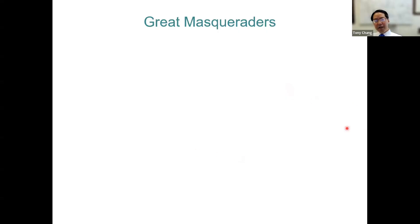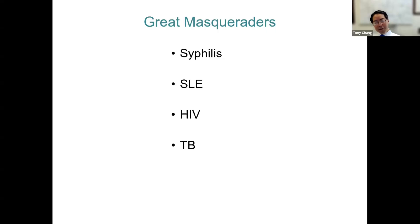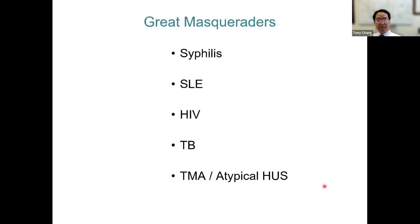I believe atypical HUS is a great masquerader. Right in the history of medicine, syphilis was one of the earlier ones, then it was lupus, then it was HIV — when that came on the scene, it was really perplexing. These are all fairly straightforward diagnoses now that we don't have to worry about. You can also throw TB into this mix. But now we are in the midst of how complement-mediated TMA, or atypical HUS, is absolutely the great masquerader that we are not currently thinking about enough.